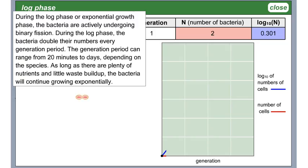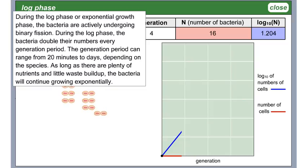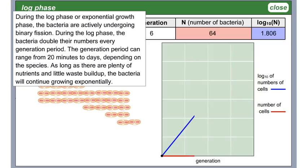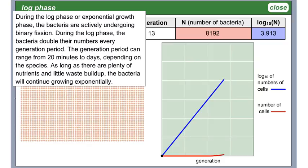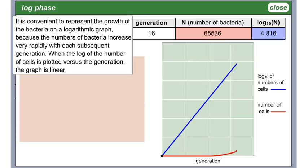During the log phase, or exponential growth phase, the bacteria are actively undergoing binary fission. The bacteria double their numbers every generation period. The generation period can range from 20 minutes to days, depending on the species. As long as there are plenty of nutrients and little waste buildup, the bacteria will continue growing exponentially. It is convenient to represent the growth of the bacteria on a logarithmic graph, because the number of bacteria increase very rapidly with each subsequent generation. When the log of the number of cells is plotted versus the generation, the graph is linear.